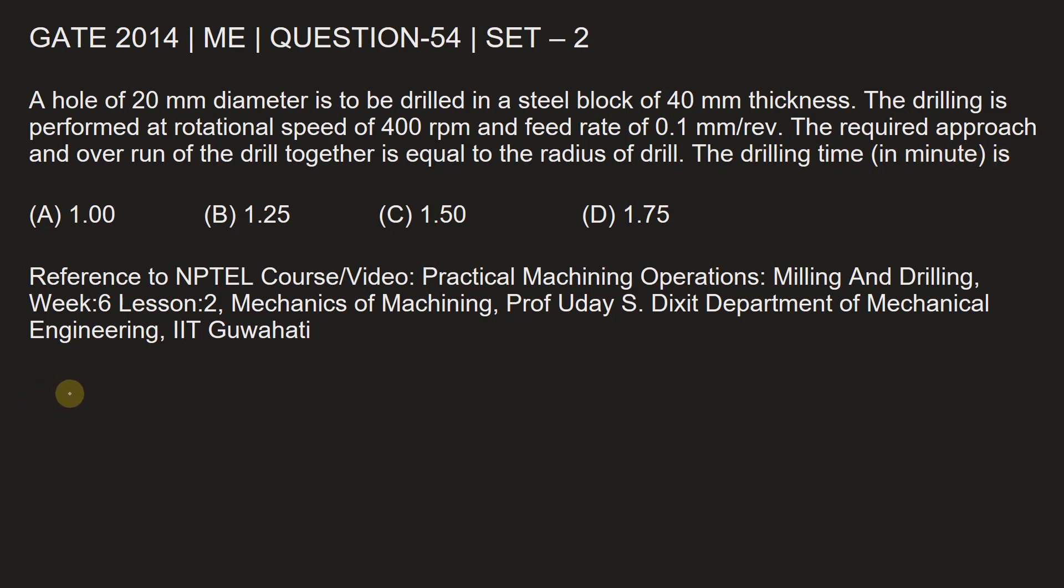Let's write the given information first. Diameter of the hole is given to be 20 millimeters. Thickness t is 40 millimeters. Speed is given in terms of rpm, N as 400 rpm. Feed rate is also given as 0.1 millimeter per revolution.